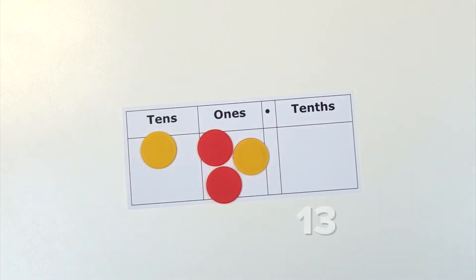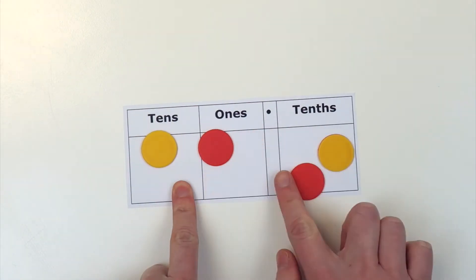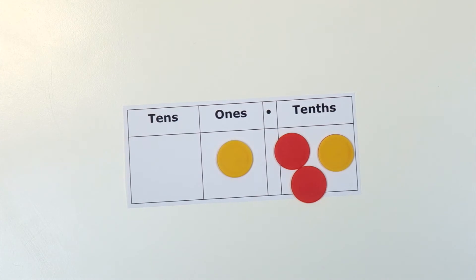If we compare the number 13 with the number 1.3, the order of each set of numbers is the same, but the first number is 10 times larger than the second.